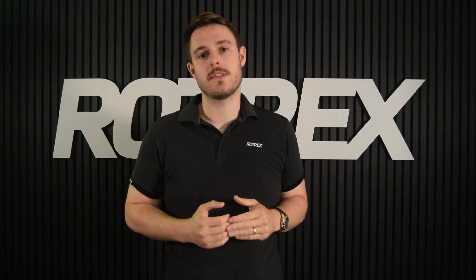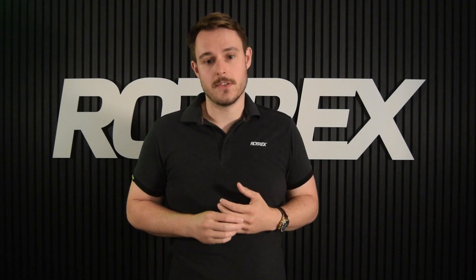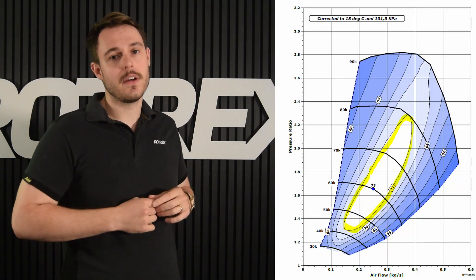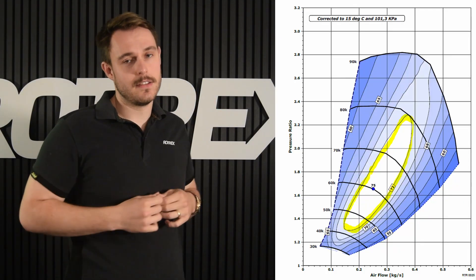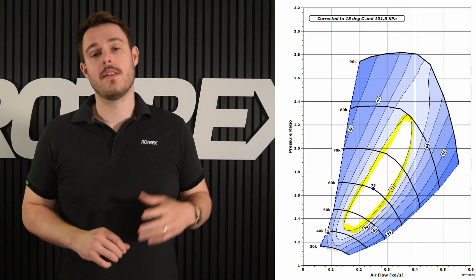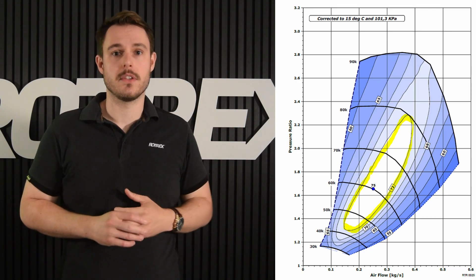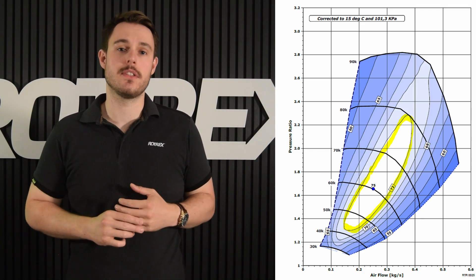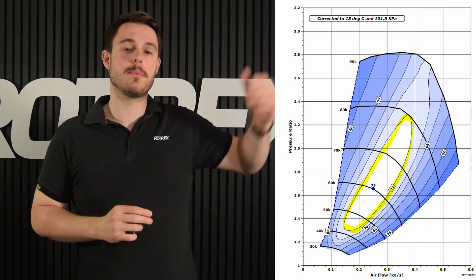Now even though the compressor can make a lot of pressure with not very much flow, or a lot of flow and not very much pressure, we really want to be in the sweet spot — and why? Efficiencies. The efficiencies are shown in the diagram by these islands. Efficiency is basically a measure of how efficiently the compressor or supercharger compresses the air. As you can see, the highest efficiencies go up through the middle of the speed lines.